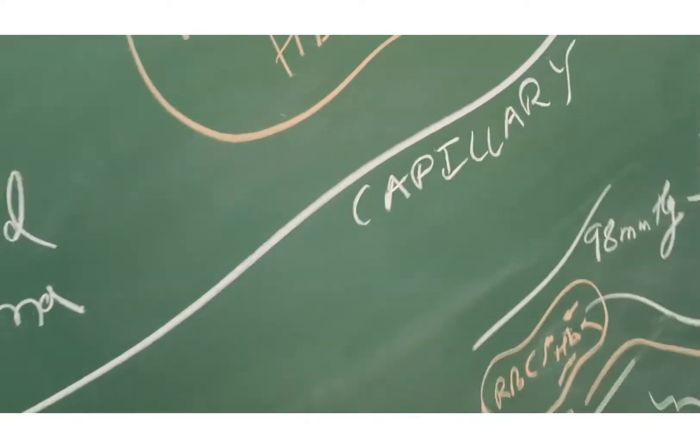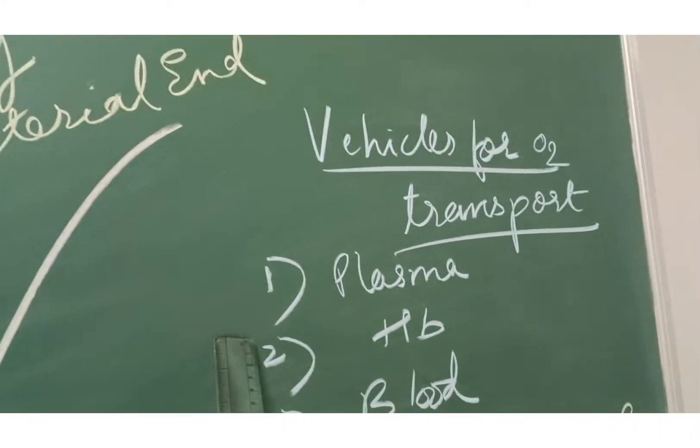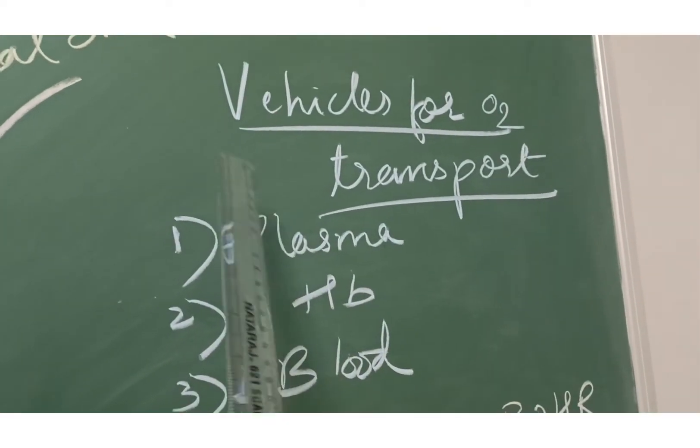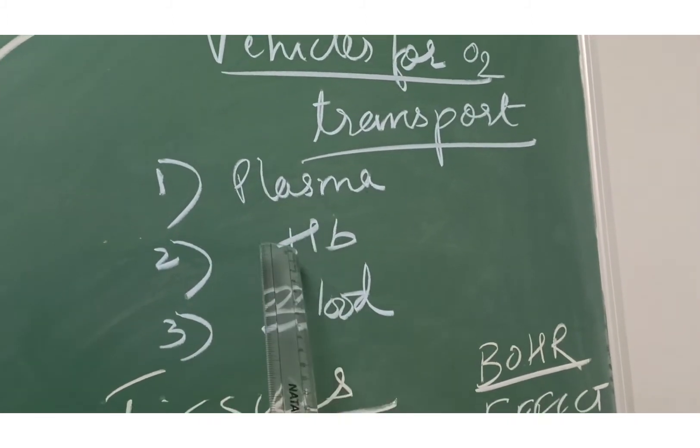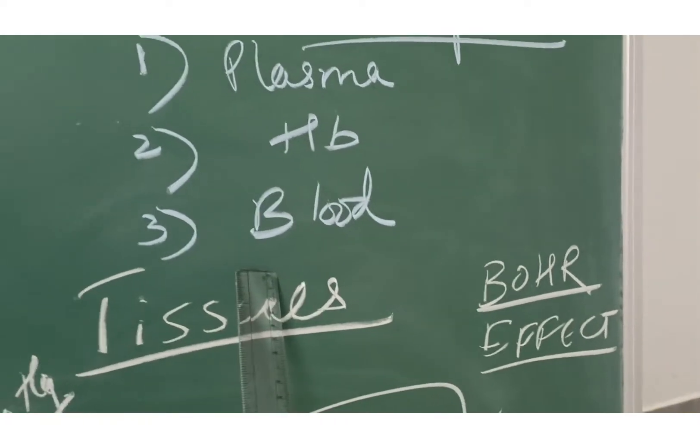This was at the level of the capillary. These are the vehicles for the transport: three important vehicles for transport of oxygen. First is plasma, second is hemoglobin, third is blood.